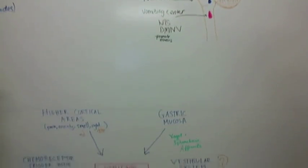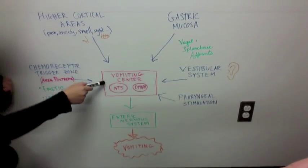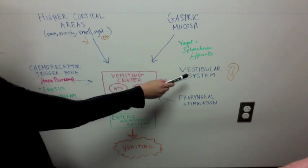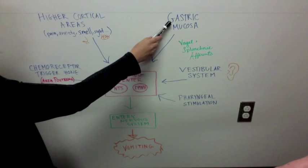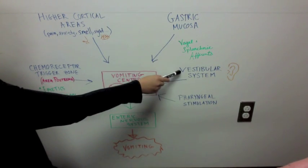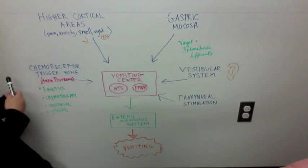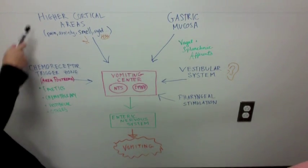The vomiting center is triggered by a variety of stimuli, such as tickling the back of the throat, the gag reflex, gastric overdistension from overeating, and vestibular stimulation from motion sickness. The cortex also influences vomiting. This is why some people vomit after seeing someone else vomit.